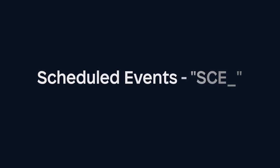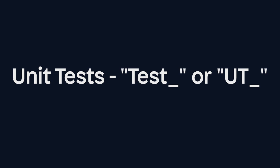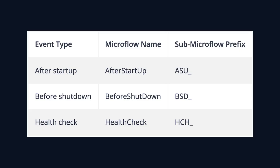Some examples here are scheduled events, which get the prefix SCE, validation flows which get VAL, and unit tests which can get Tests_ or UT_. Finally, there are app microflows, which trigger when the app is started or shut down. Any sub-microflows called inside these app event flows should also receive their own prefixes.